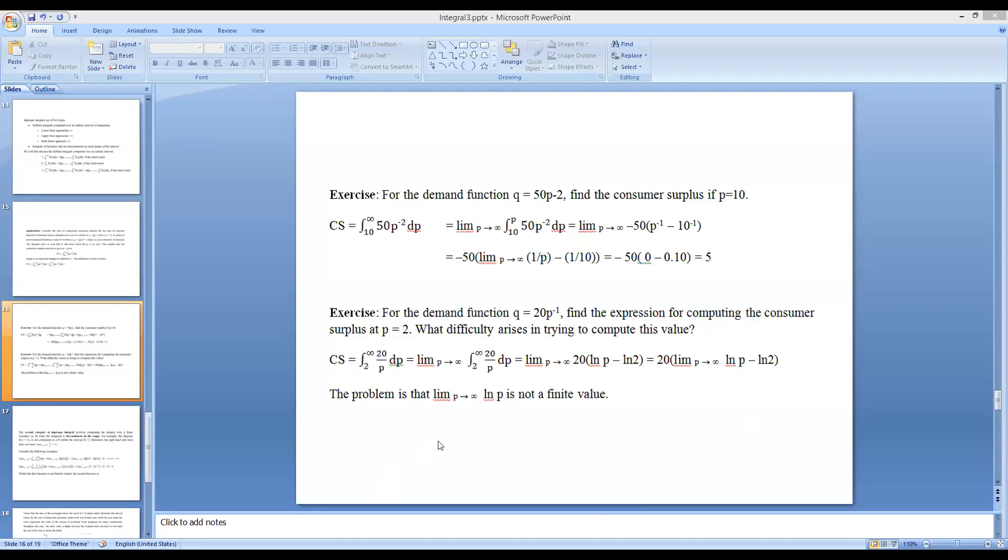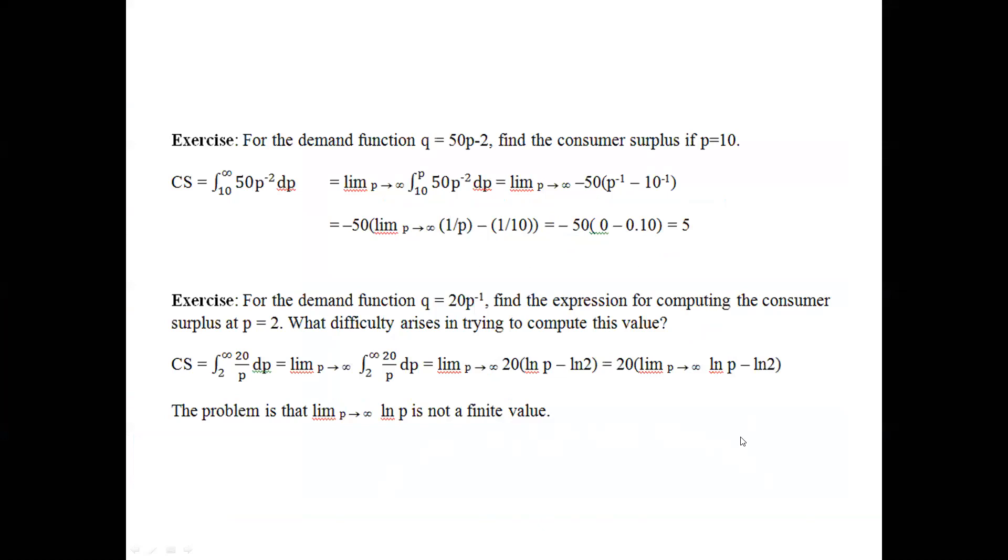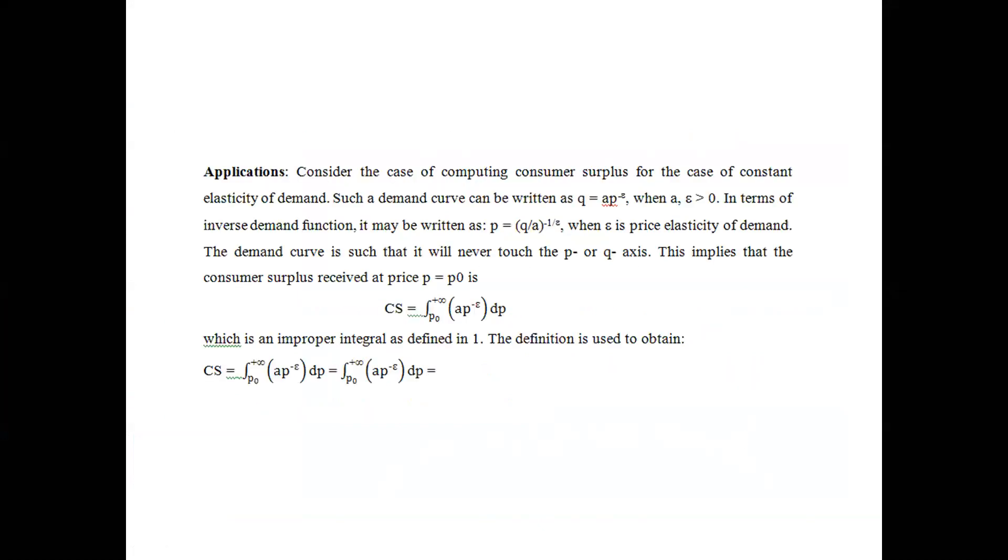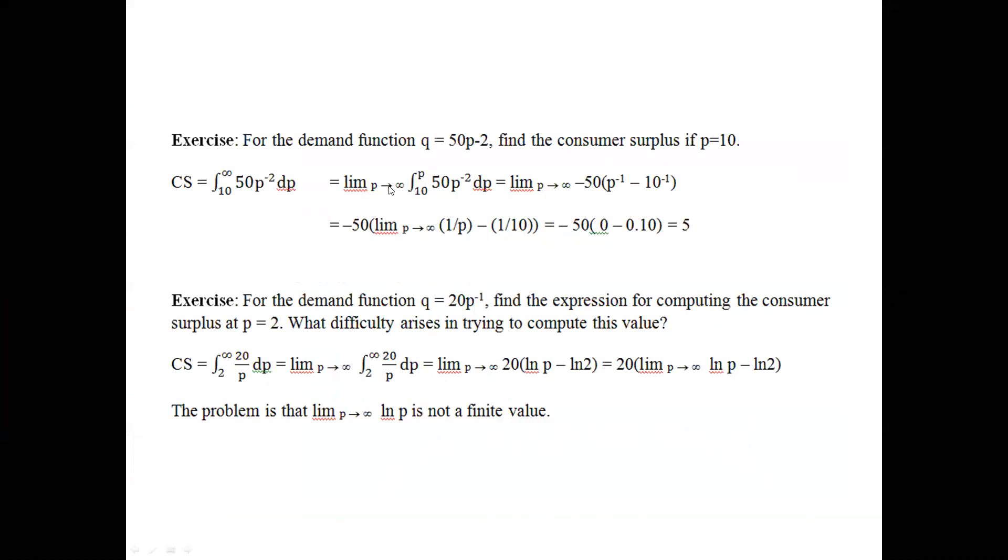In the earlier session, I showed how to derive this. Now we're taking another demand function: Q equals 50P to the power of minus 2, and price is 10. So we're integrating from 10 to infinity, putting a limit where P tends to infinity.